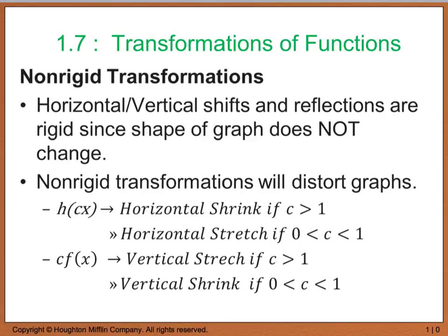On the other hand, to get vertical stretches and shrinks, we take that scalar and multiply it by the function itself. If the scalar c is greater than 1 — something like 2, 3, 10, 100 — this gives us a vertical stretch. If that number c is between 0 and 1, like a fraction, then this gives us a vertical shrink.